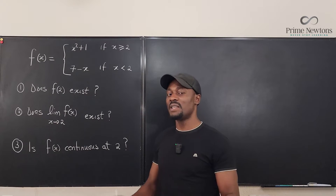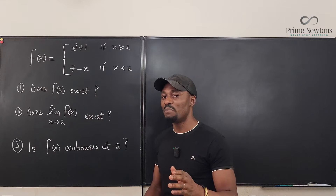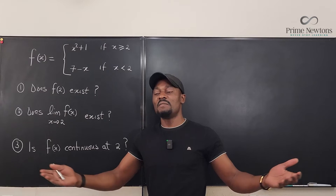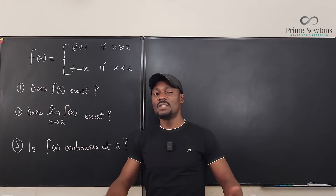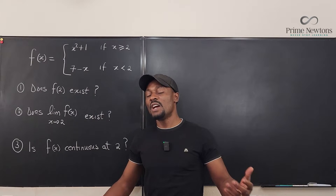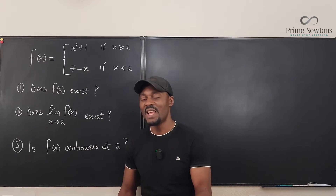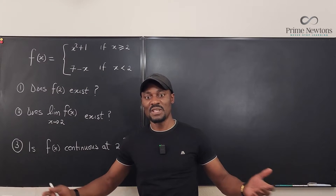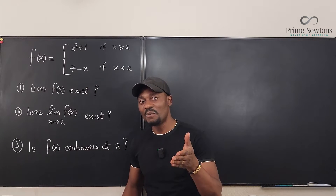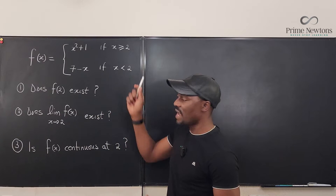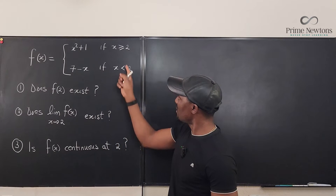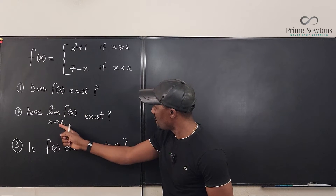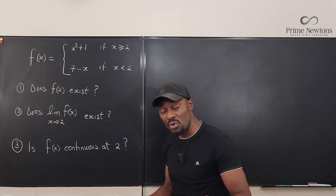Every time I say something, I refer to a point. You cannot just say a blanket statement like 'the function is continuous' — continuous where? Because a function does not necessarily have to be continuous everywhere; it just has to be continuous at the point we're interested in. The point of interest for this video is when x is 2, because the focus of every question you've been given has been around 2.